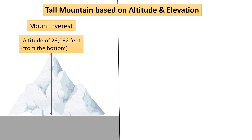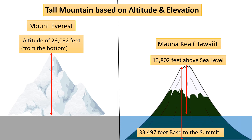But when considering the total height from its base on the ocean floor to its summit, Mauna Kea in Hawaii is often considered the tallest mountain in the world. Mauna Kea is an inactive volcano in Hawaii with a peak that is just 13,802 feet above sea level. However, much of Mauna Kea is hidden below sea level, and from base to peak it measures 33,497 feet, making it the tallest mountain by total height.